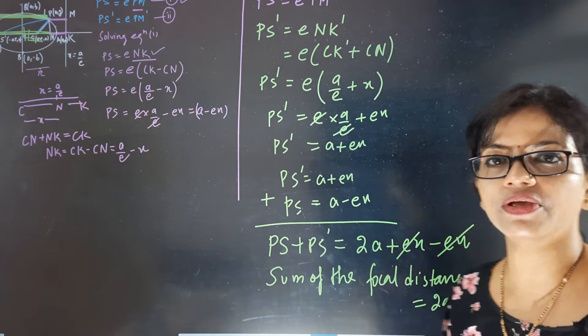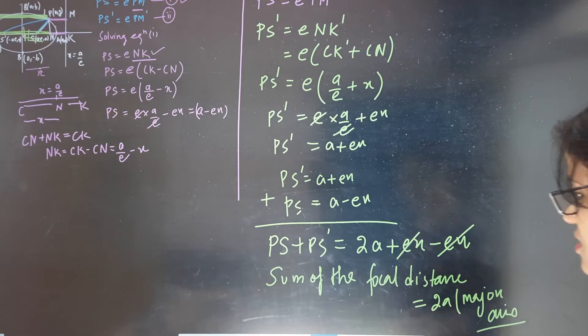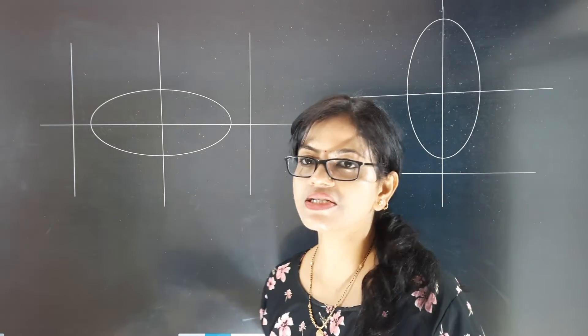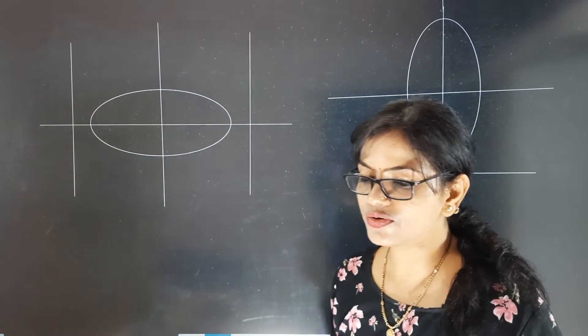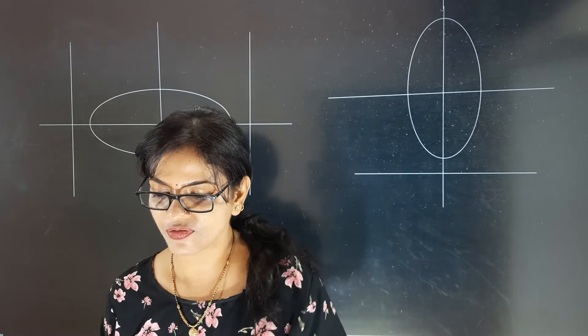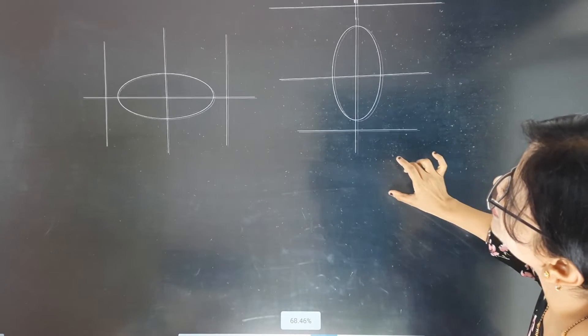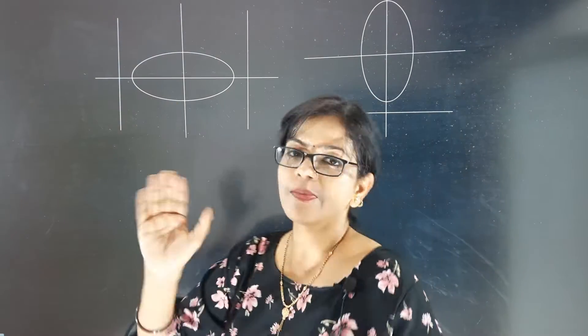This is a very important finding: PS plus PS dash equals 2a. Sometimes they will ask you to prove that the sum of the focal distances equals 2a. Now we are going to look at the two different types of ellipse.